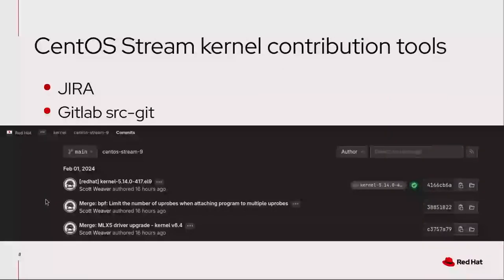If you want to contribute to the CentOS stream kernel, the tools you need to use are Jira and GitLab — not the distgit, but the sourcegit. Sourcegit was introduced about 15 years ago for RHEL 4 and 5 in the kernel. These days it is in GitLab and it uses merge requests. Some merge requests can be large updates — for example, one that updates a driver to 6.4 — or they can be small bug fixes. Generally there are one to three new packages produced every week.